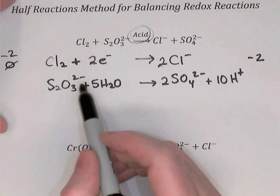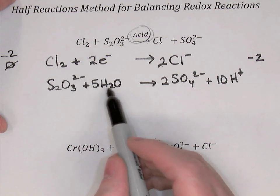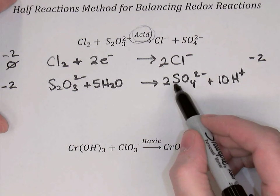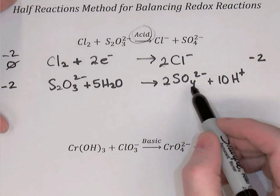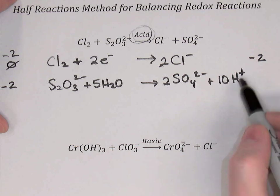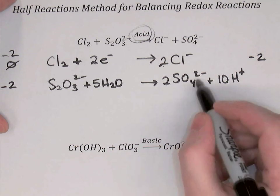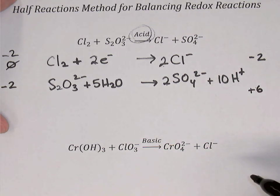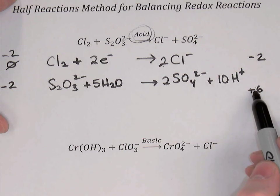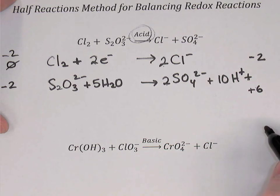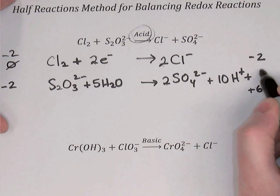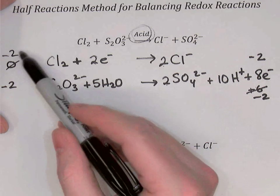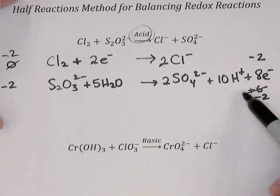In the second half-reaction, the thiosulfate has a charge of 2⁻ and the five waters are neutral, giving minus 2 on the left. On the right, two sulfates (2×−2 = −4) plus 10 hydrogen ions (+10) gives a total of +6. The difference between +6 and −2 is 8, so we add 8 electrons to the right-hand side, making both sides equal at minus 2.